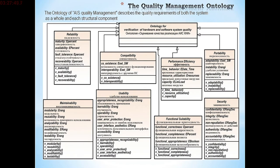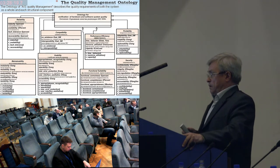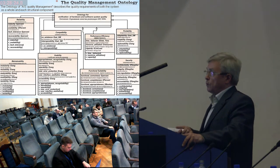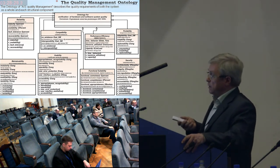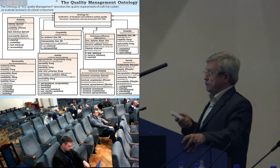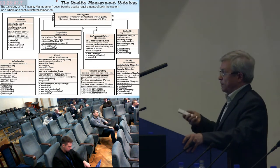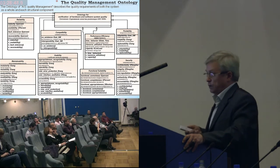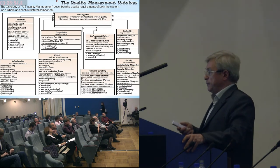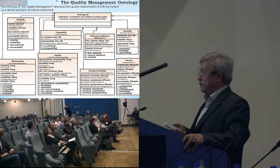Ontology number two used here is the ontology of quality management for program and technical systems. We are not the developers of it — we use the quality management ontology from standards in series 9.1.2.6, and another series currently being developed, 2.5. This ontology implies that the main characteristics of quality are: functional usability, reliability, supportability, transferability, compatibility — eight characteristics in total. Each characteristic has sub-characteristics, and sub-characteristics have their own quality indicators, then means, metrics, and means of measurement and assessment.